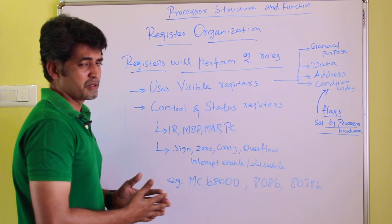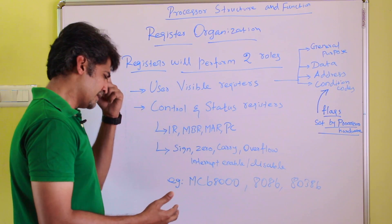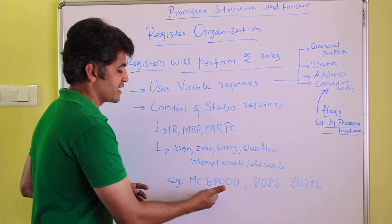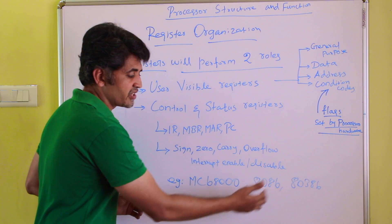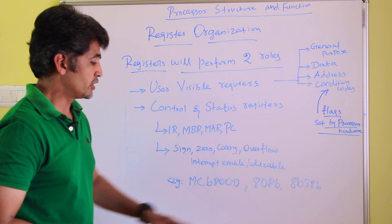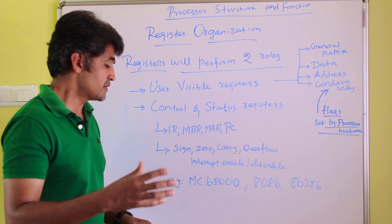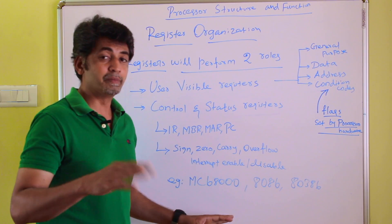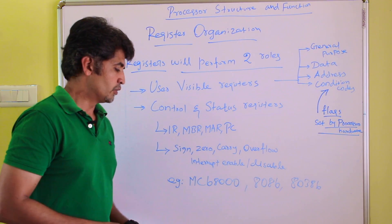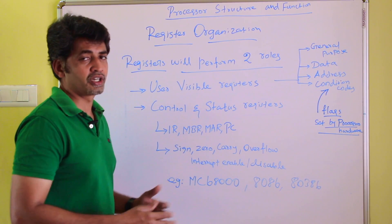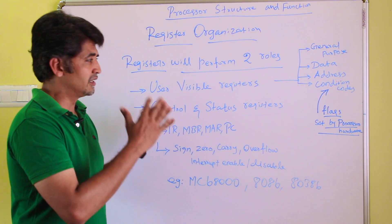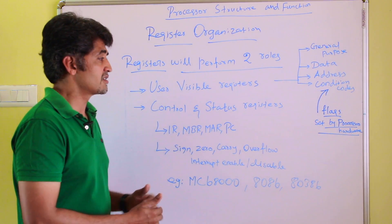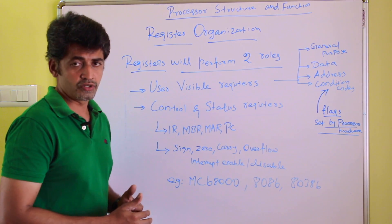There are three different examples of register organization: the MC68000, the 8086, and the 80386 processors. These three different processor organizations each have different register organizations. Each processor has a different set of general purpose registers, data registers, address registers, and conditional codes.